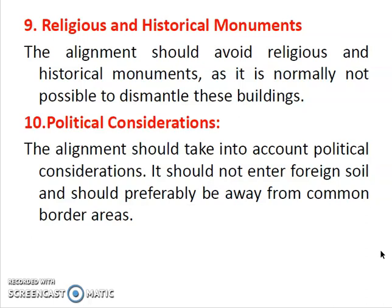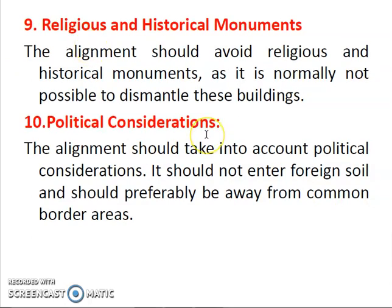Coming to the spiral or complete loop method, this is used in narrow valley regions. A small bridge or viaduct is constructed at a considerable height to span the valley. In this case, a complete loop of the railway line is constructed. All these points should be considered when doing the alignment of a railway track. Thank you.